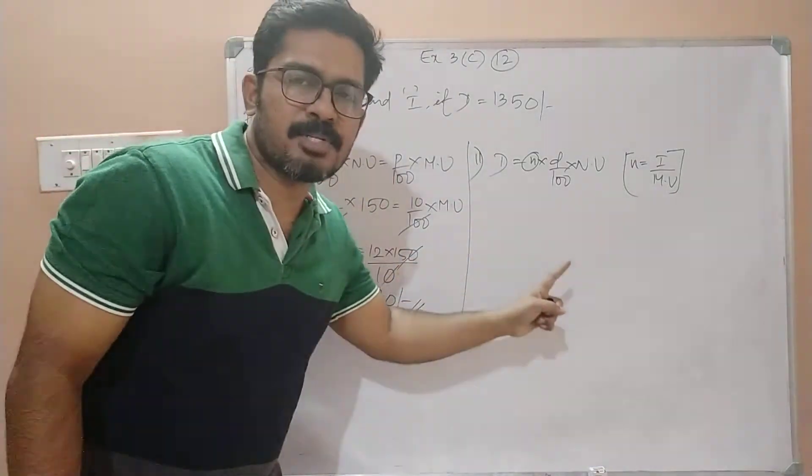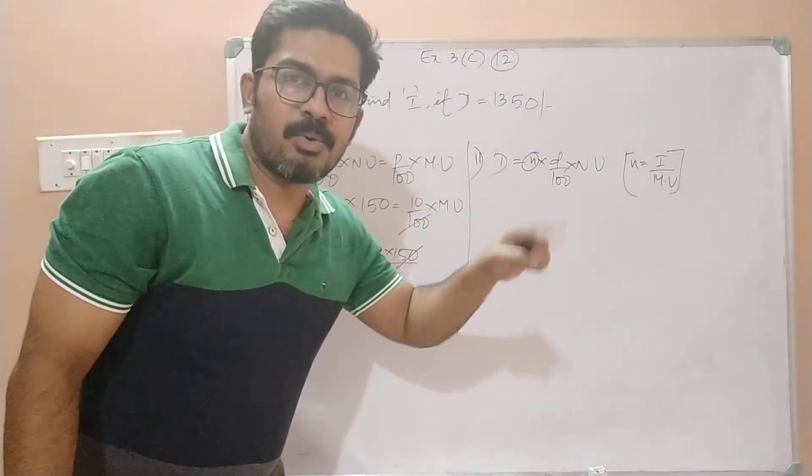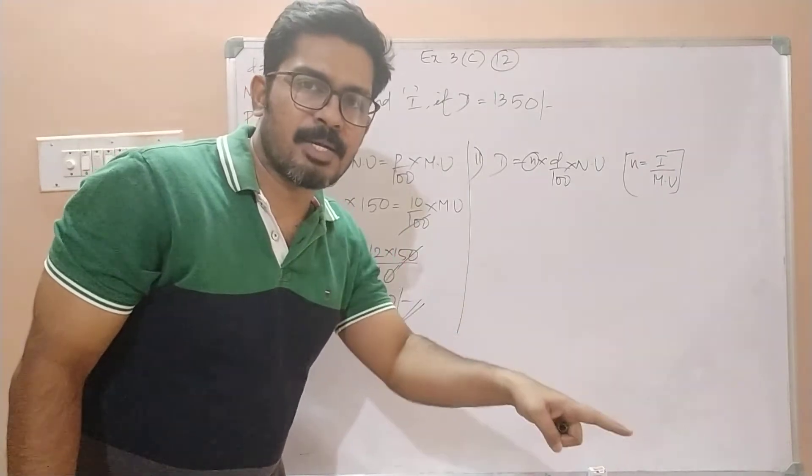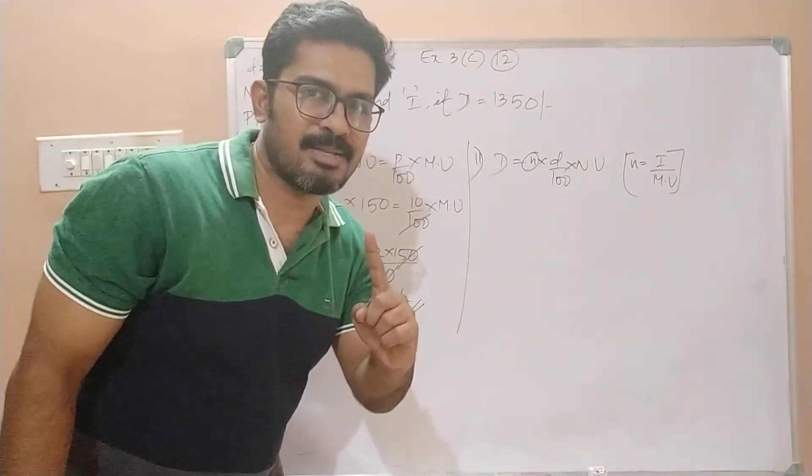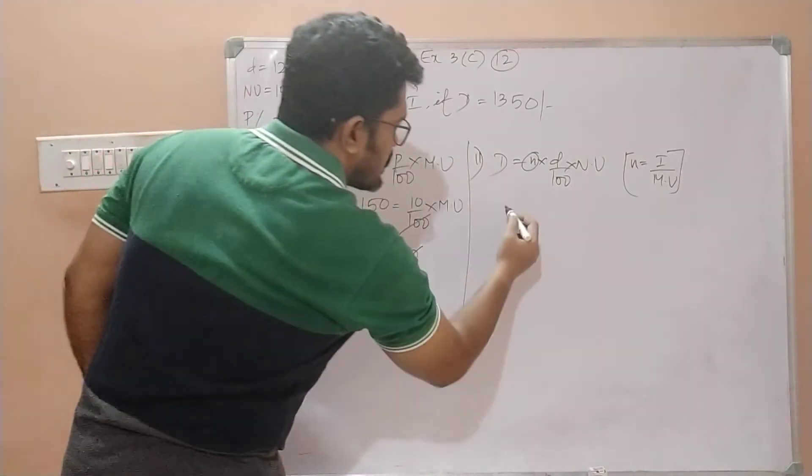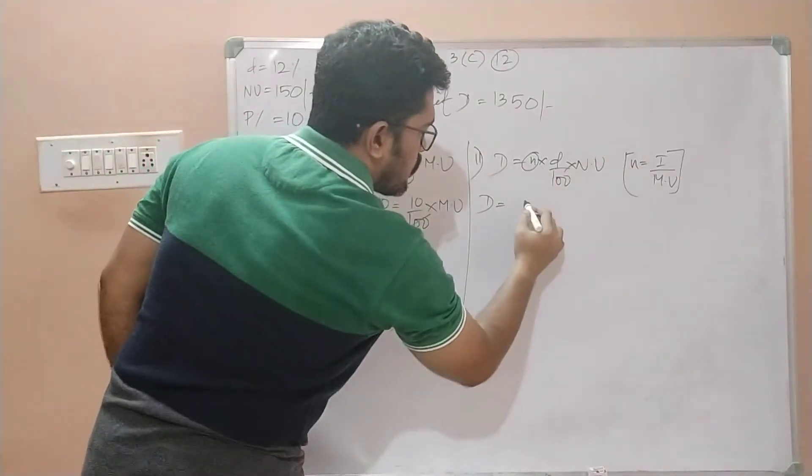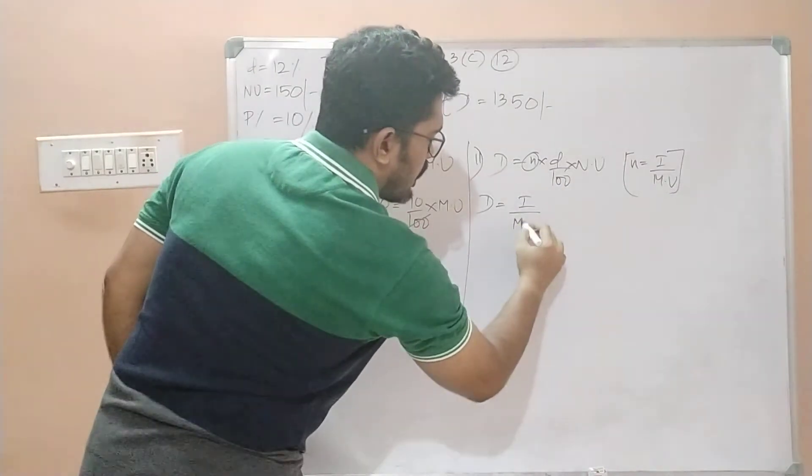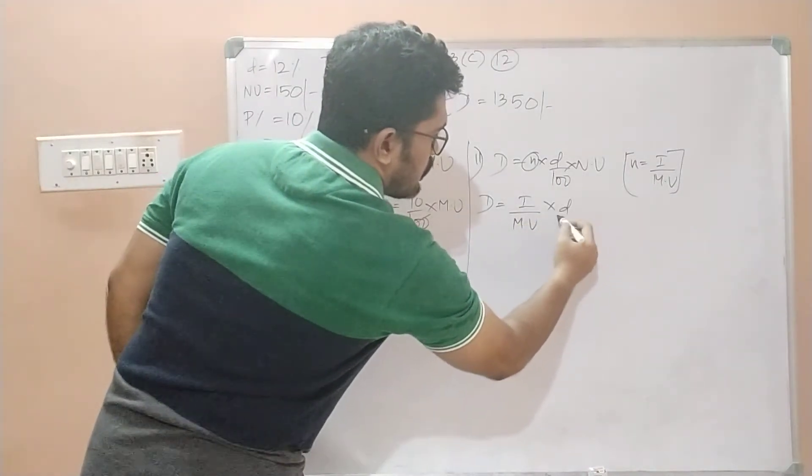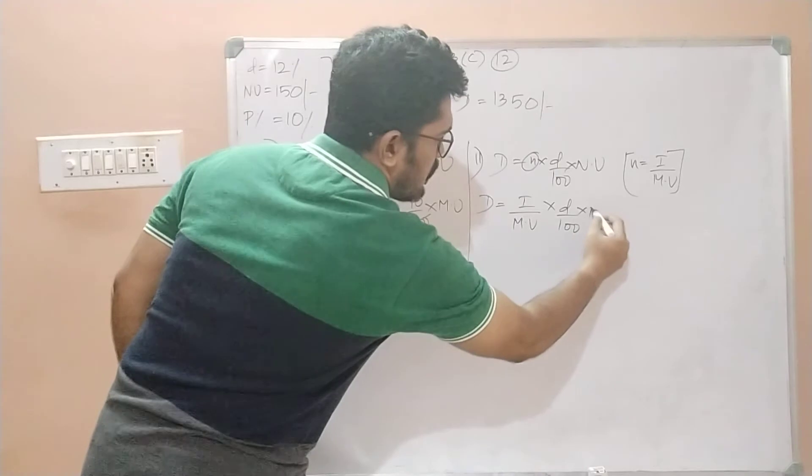The total investment made in the company divided by the market value at which you are purchasing one share. So what I'll do in the next step is replace n with i divided by market value × d/100 × nv.